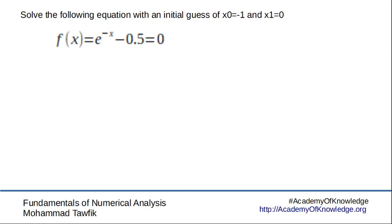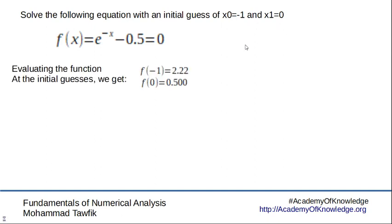f of x is e to the minus x minus 0.5. And now we start with two initial guesses, x zero equals minus one and x one equals zero.